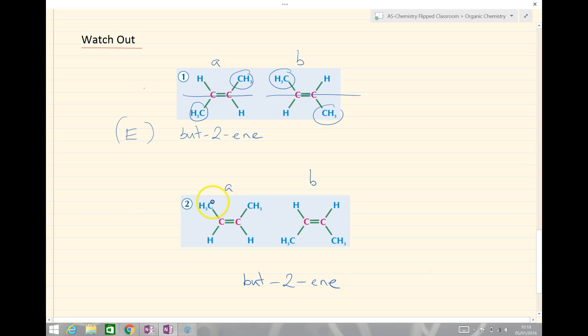My highest priority are the methyl groups. If I look at my carbon double bond, these are on the same side, and that means I name these as Z-but-2-ene. So, just those two things to watch out for in E and Z.